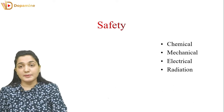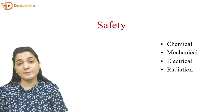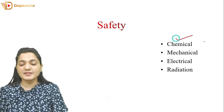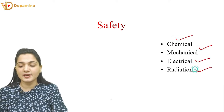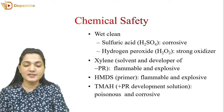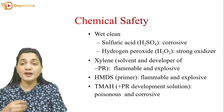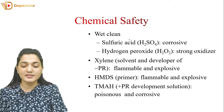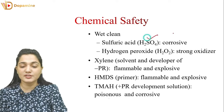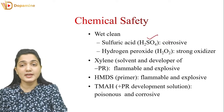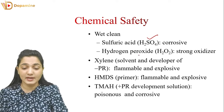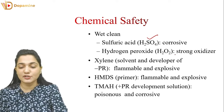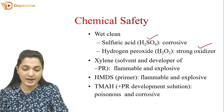Now for safety — in Photolithography we talk about four types of safety: chemical safety, mechanical safety, electrical safety, and radiation safety. For chemical safety, if we are doing wet cleaning, H2SO4 is used which is corrosive, so we have to handle it very carefully. We also have hydrogen peroxide H2O2, which is a strong oxidizer and should be carefully handled.